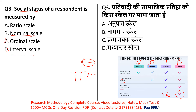Interval and ratio scales are not applicable here — social status does not have a meaningful zero. Therefore, to measure a respondent's social status, we use the nominal scale. The correct answer to this question is nominal scale.